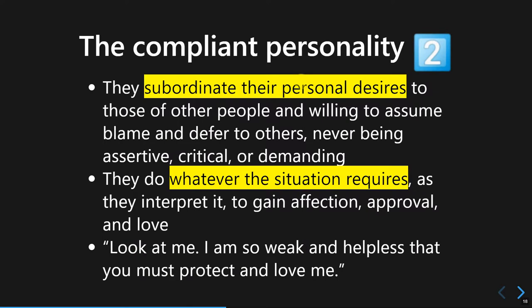They subordinate themselves and put aside their personal desires in order to gain affection and attention from other people. They fulfill every wish of others by not being assertive, critical, or demanding to their partners — sometimes just doing whatever the partner wants to get their love and affection. A sentence that sums up the whole idea of compliant personality would be: 'Look at me, I'm so weak and helpless — that's why you need to protect, guide, and love me.'